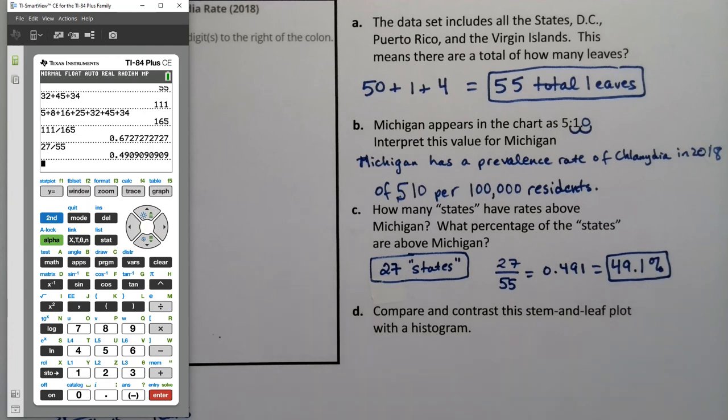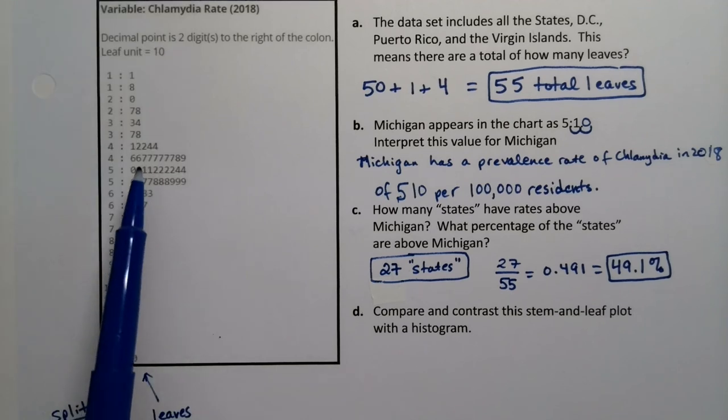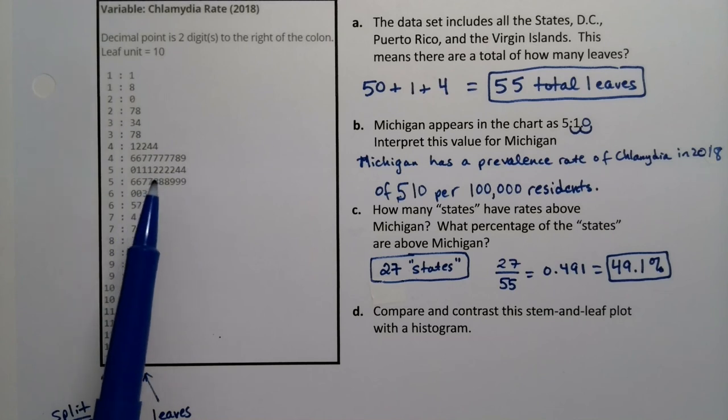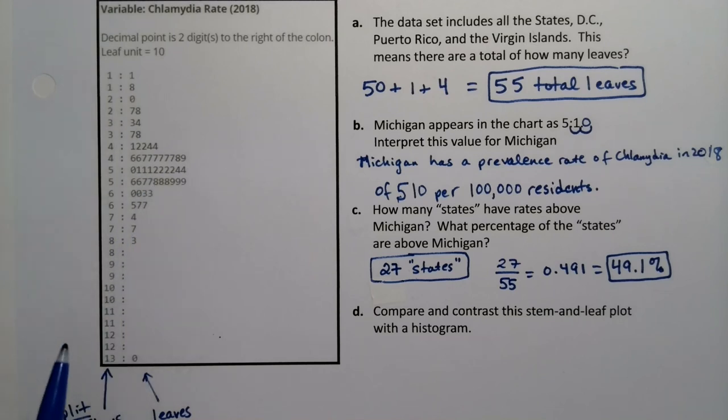Make sure you put the percent sign to indicate that it's a percentage. So Michigan's really in the middle, right? If you compare Michigan's rates, Michigan's really smack dab in the middle of this group. Very, very much an average state in terms of chlamydia.